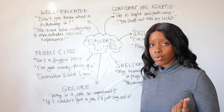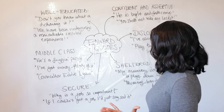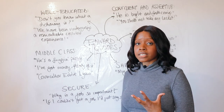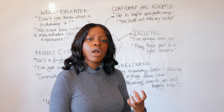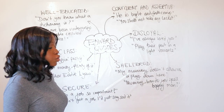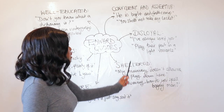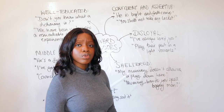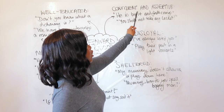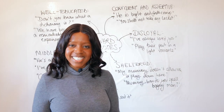So remember, when writing about Edward, consider that he is well educated, very middle class unlike his twin Mickey, incredibly secure but sheltered by his parents, disloyal towards his friend Mickey, and finally quite confident and assertive.